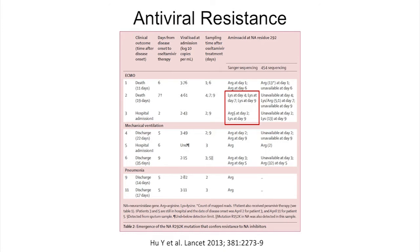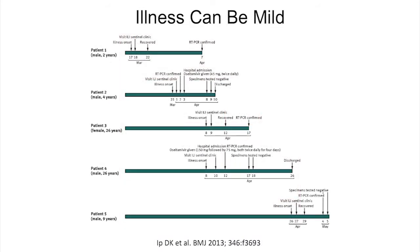Despite these concerning findings, we also learned there were many mild H7N9 cases. A series of five patients — including three children — developed influenza-like illness: two were admitted, tested positive, recovered, and were discharged; three never even went to the hospital, being seen only in a clinic with mild illness and recovering fully. So it became apparent that not all infections with this new strain cause severe influenza — there's a substantial spectrum including mild disease.